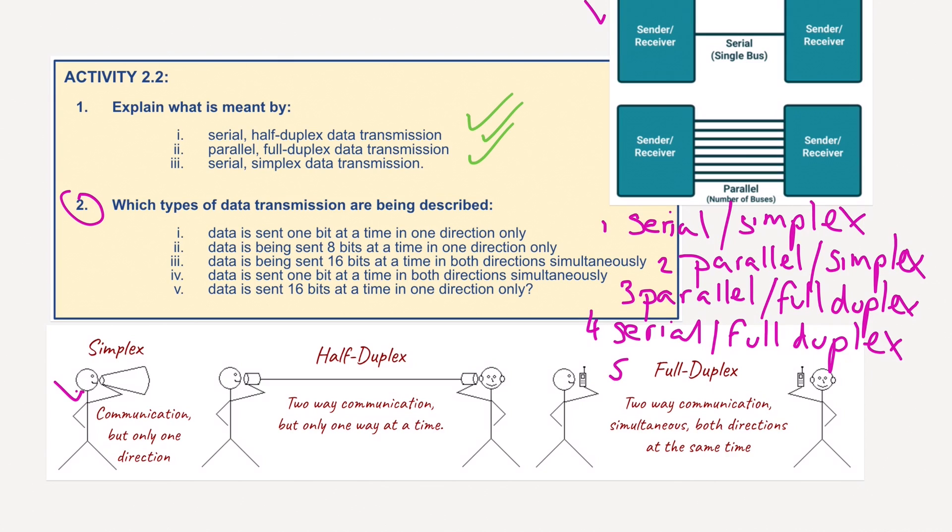And finally, question five, data is sent 16 bits at a time in one direction only. Again, parallel, but this time we are doing simplex.